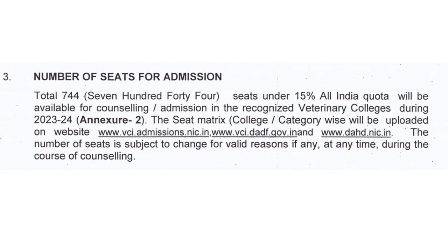After registration and payment, you have to regularly visit the website and log in to check for any updates, information, or notifications. After the declaration of results, your result will be shown on the website once you log in. If you get a college, you have to download the seat allotment letter provided on the website. If you don't get a college in Round 1, further instructions will be given on the website after login.